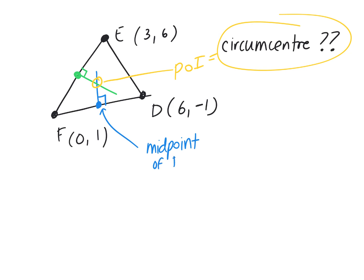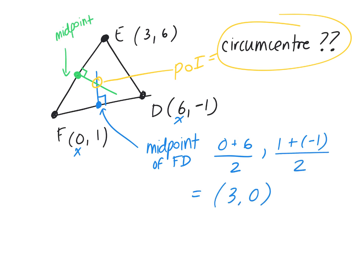The first thing we'll do is find the midpoint of FD. We add the two x-coordinates and divide by two, then add the two y-coordinates and divide by two. Everyone should agree that the midpoint is (3, 0). That gives you a point on the perpendicular bisector — a point on the line whose equation we're trying to find.